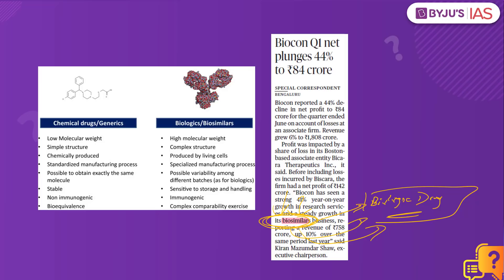Why is it called a biosimilar? Because there is a reference drug, and a similar one is produced by another company making only a few changes, where its quality is similar to that of the biologic drug. Everything will be similar — the efficacy will be the same, the safety standards will be the same, and the quality is entirely the same. Only a few changes would be made in the inactive components. So after the expiry of the patented drug, another company producing a drug similar to the reference drug is what is a biosimilar.